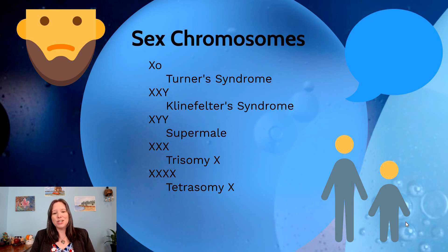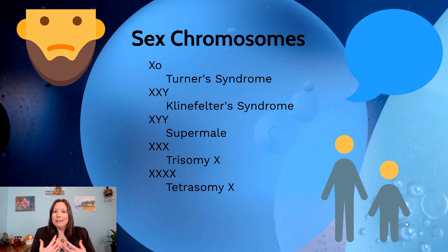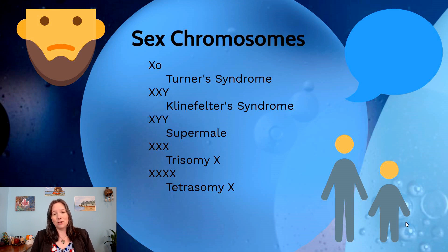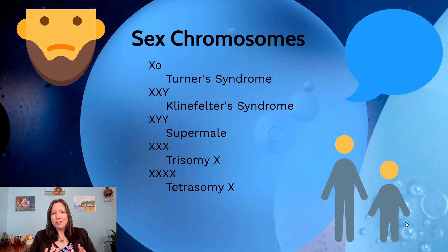Trisomy X and tetrasomy X are similar conditions where an individual has three or four sex chromosomes, all X's. Both tend to be underdiagnosed because they aren't linked with much. Individuals tend to be a bit taller than average but develop as typically developed females in most cases. Tetrasomy X has fewer than a hundred diagnosed cases in history. Some may need a little extra help with speech and language development, but neither condition is fatal as long as a person has at least one X chromosome.